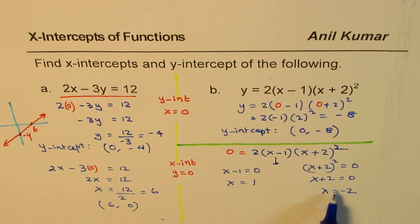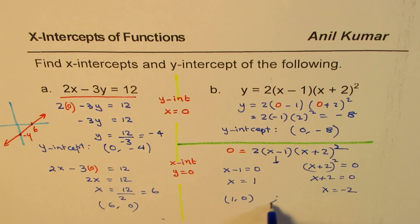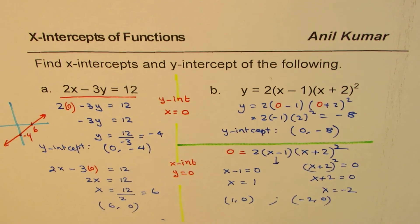So in this particular case we get 2 x-intercepts. So we have x-intercepts at (1, 0) and the other one is at (-2, 0). You could get more than 1 x-intercept also in some questions.